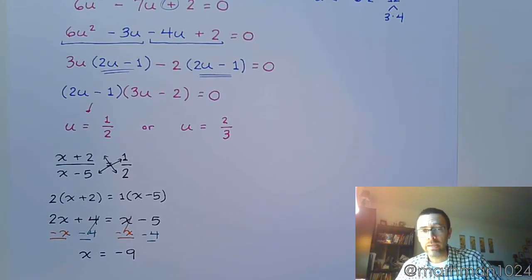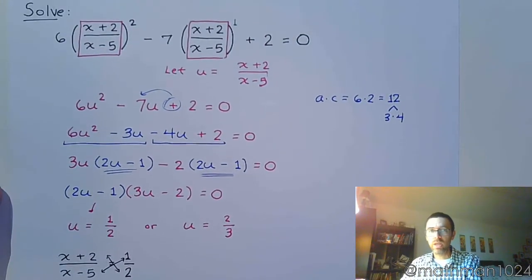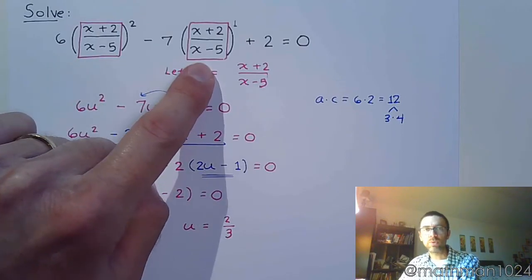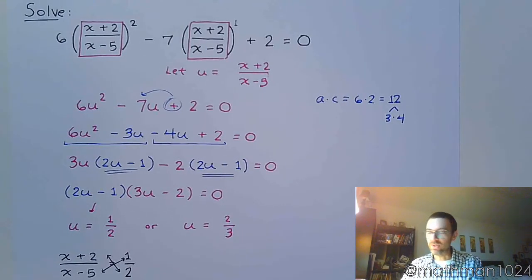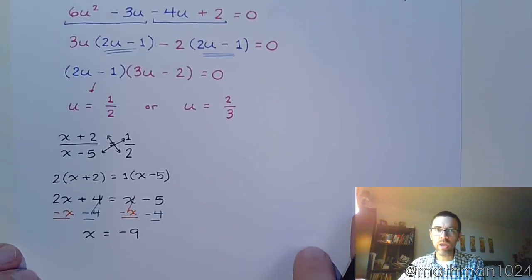And now we have x equals negative 9. But don't box that just yet. We might have some issues because we do, in our original equation, we do have fractions. And so we will have to have that discussion about what are our restricted values, if any, and we need to make sure that our solutions don't include a restricted value.